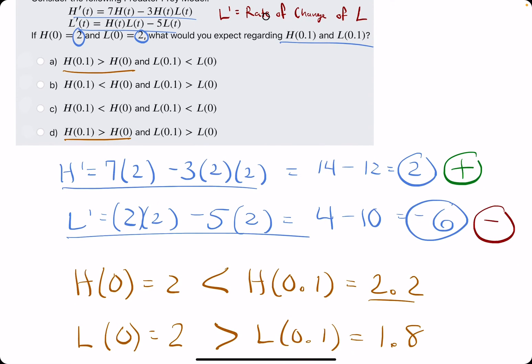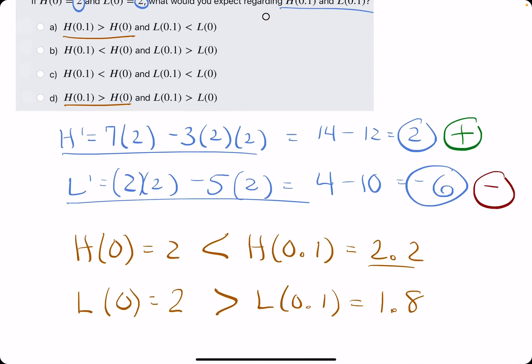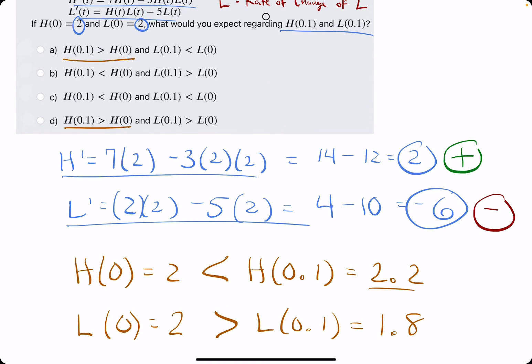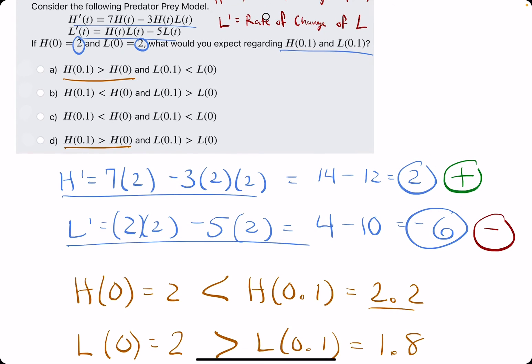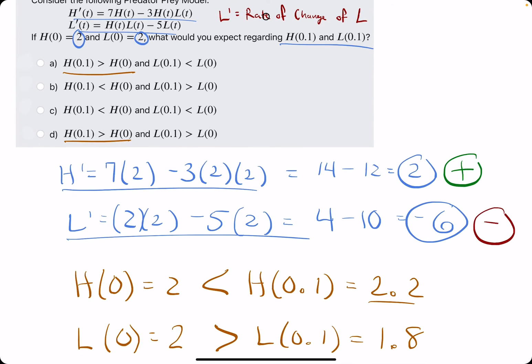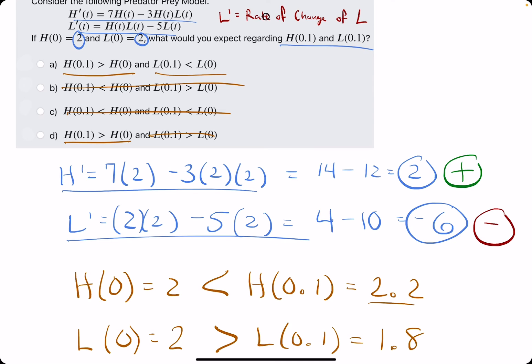Looks like A looks good, D looks good so far. H(0.1) is greater than H(0), in other words 2.2 is greater than 2. And then we need the one that says L(0.1) is less than L(0). It looks like option A checks out and option D does not.